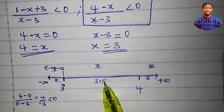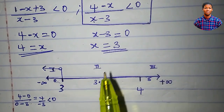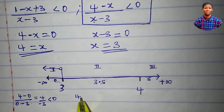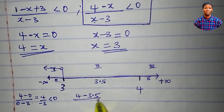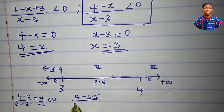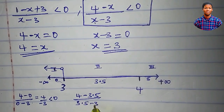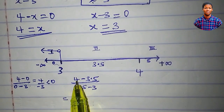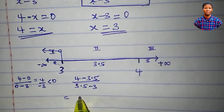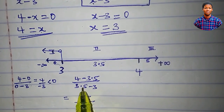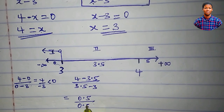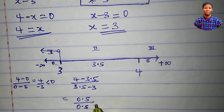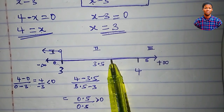Now let's test region 2 using 3.5. We have 4 minus 3.5 all over 3.5 minus 3. Let's see if the number will be negative. 4 minus 3.5 is 0.5; 3.5 minus 3 is 0.5. This is a positive number, greater than 0. So region 2 does not satisfy the inequality.